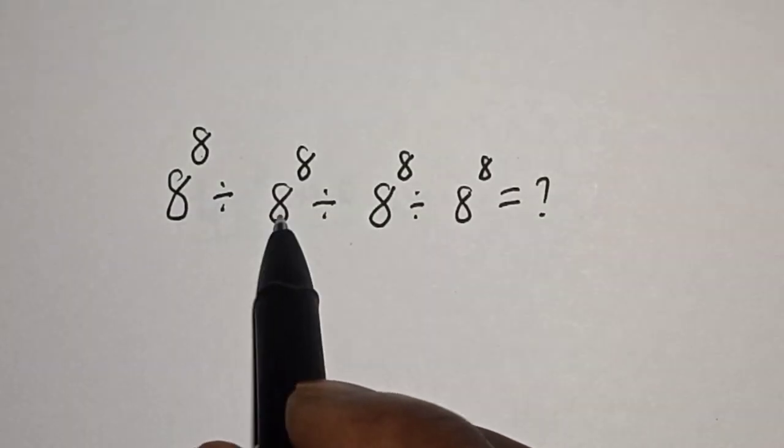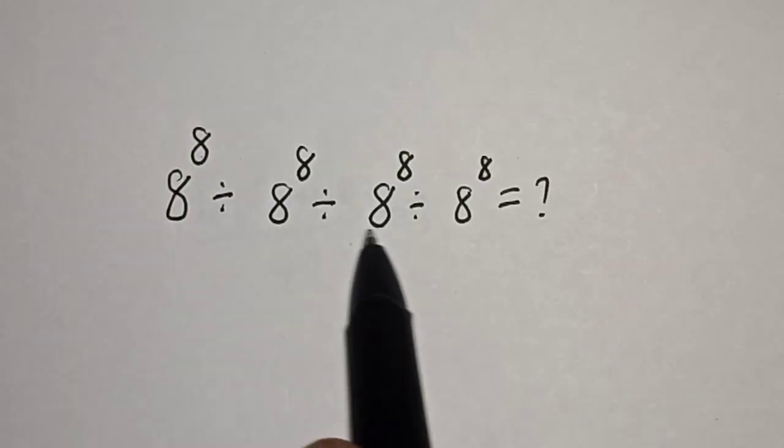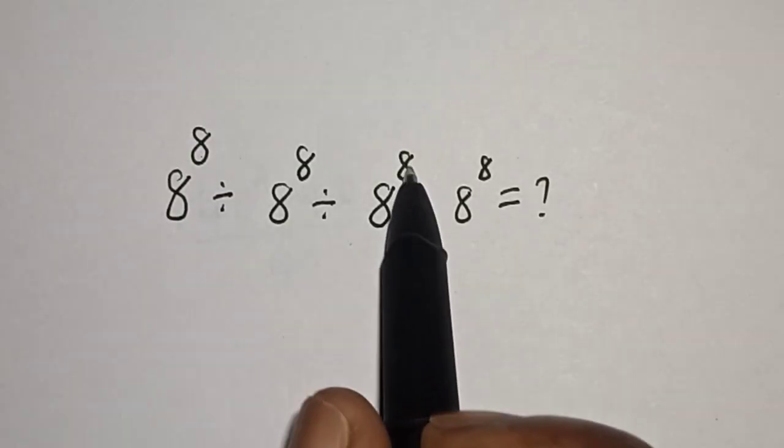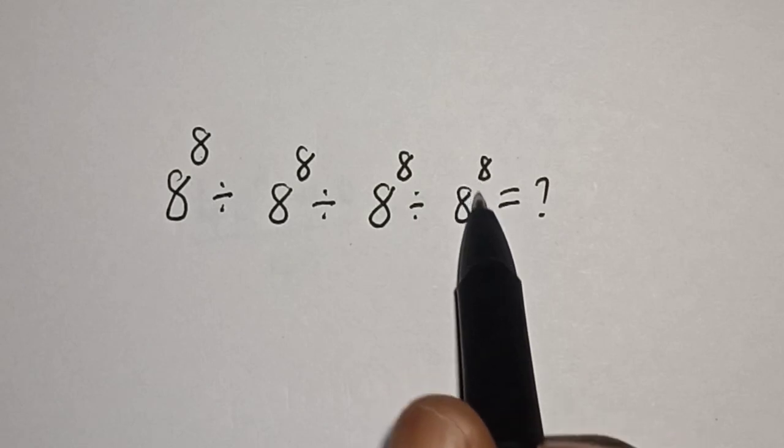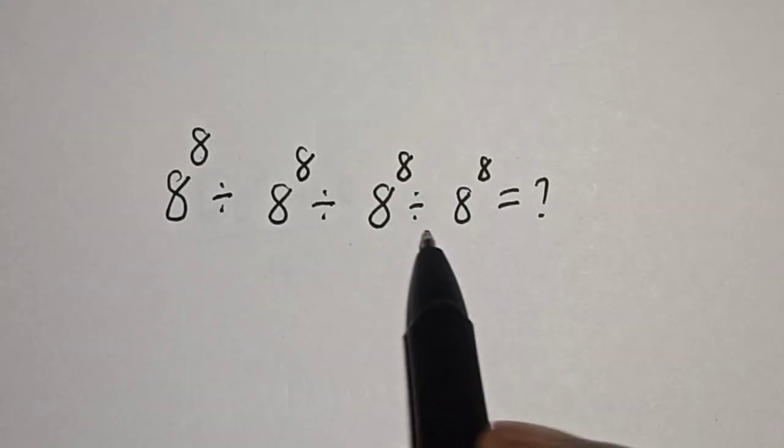8 raised to power 8 divided by 8 raised to power 8, divided by 8 raised to power 8, divided by 8 raised to power 8 — is equal to what?